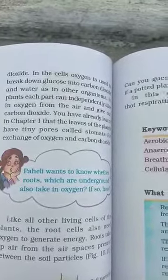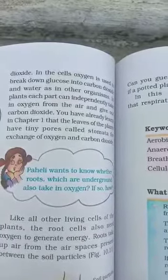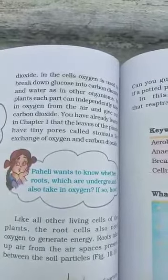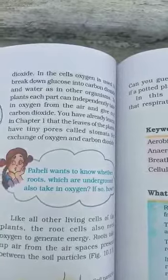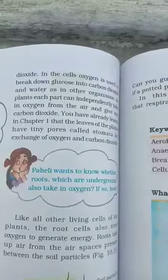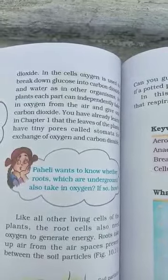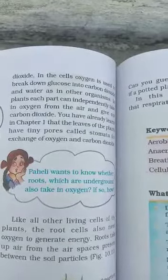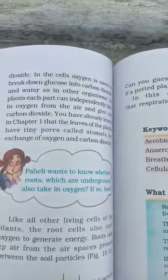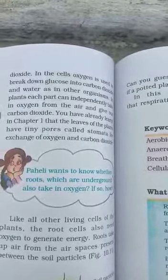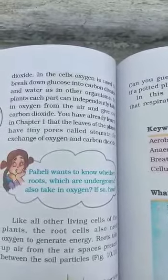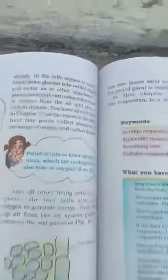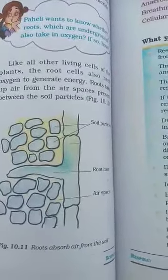As you learned in chapter one, the leaves of plants have tiny pores called stomata. Stomata are tiny pores. What is the main function of stomata? The exchange of gases — oxygen and carbon dioxide. That is the main function of stomata.